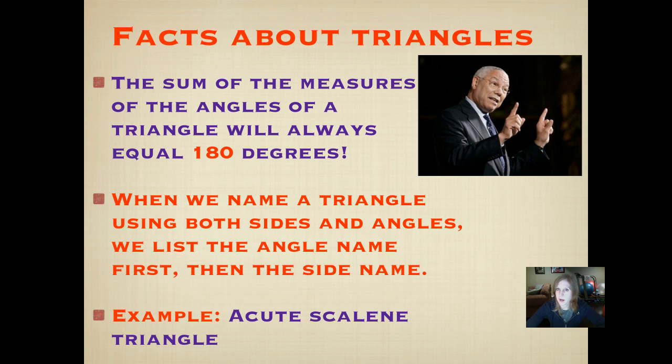Here are some things you need to know about triangles. The sum of the measures of the angles of a triangle will always equal 180 degrees. So if you have a right triangle with a 90 degree angle, you might have two other angles that are 45 degrees. Because 45 and 45 is 90, and 90 plus 90 is 180. No matter what, if you add up the measure of those three angles, it will equal 180 degrees in a triangle.